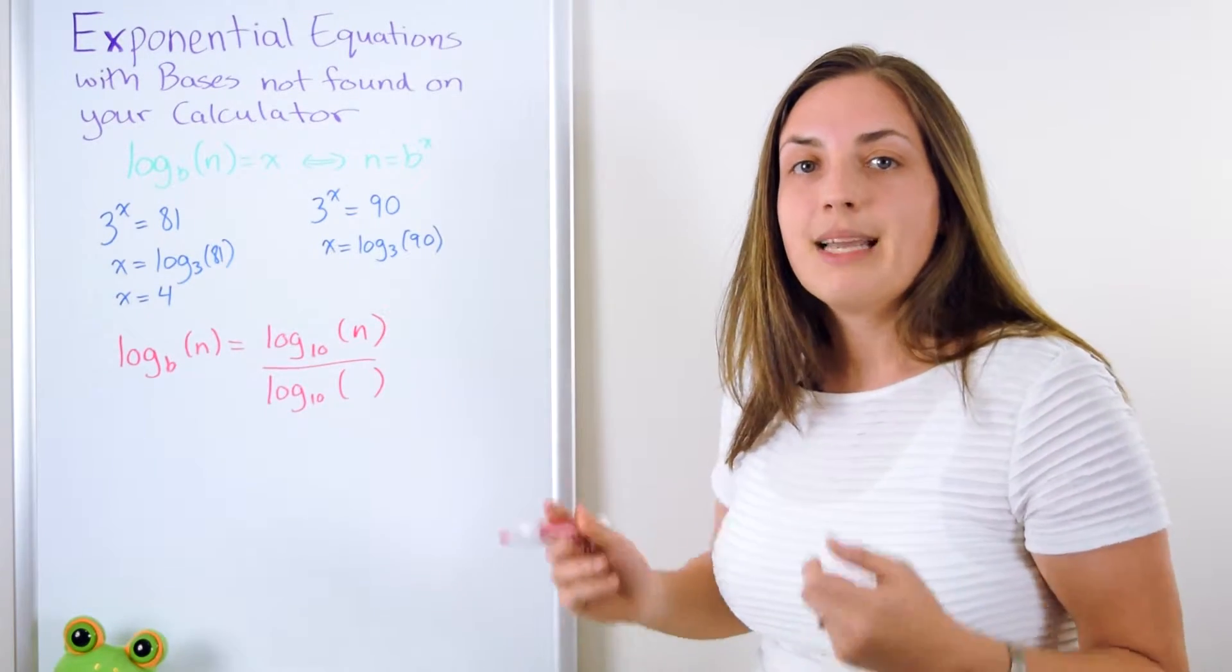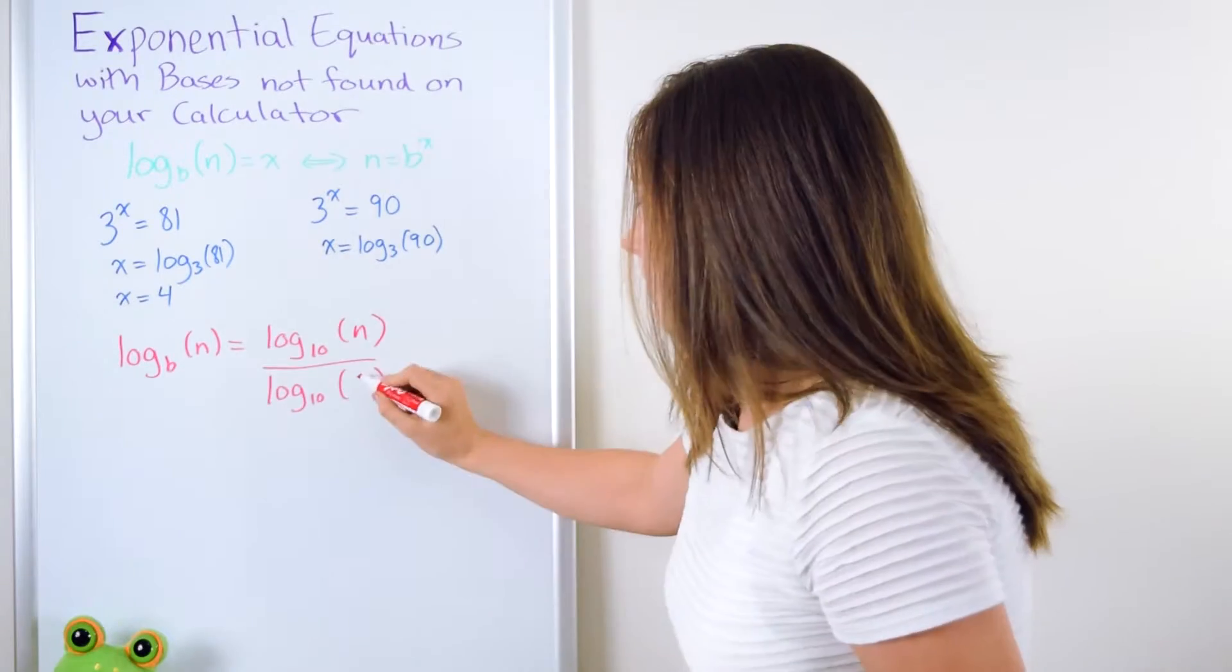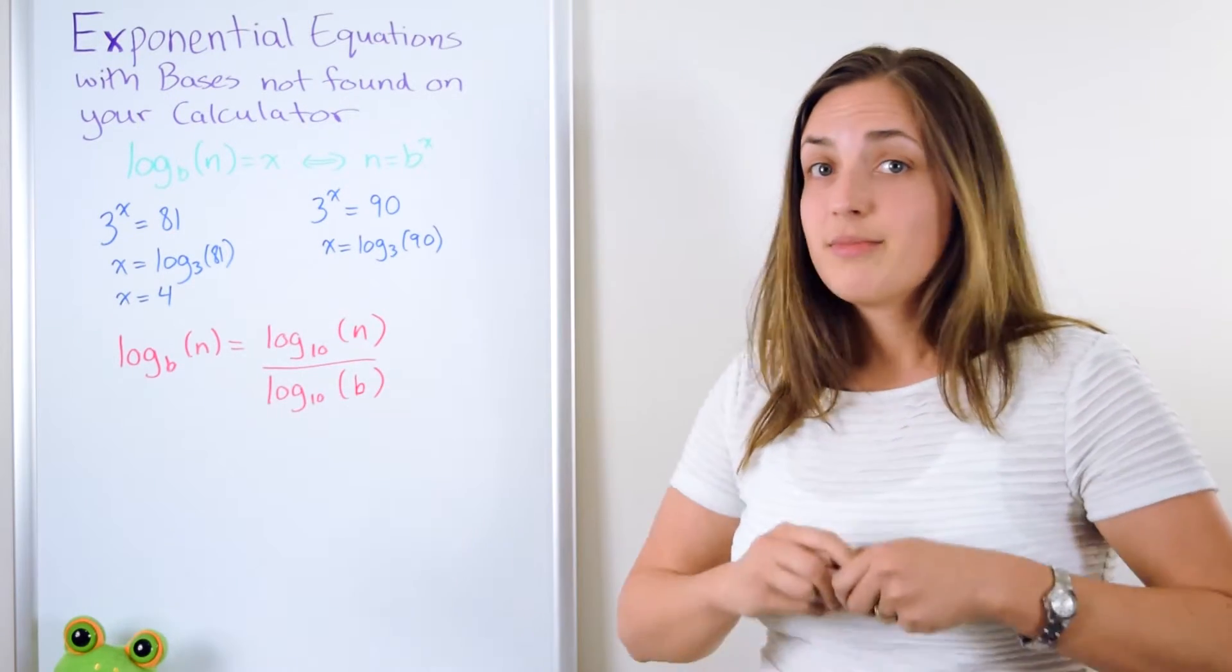The number on the bottom is the little number on the bottom, the base. And there you have it. That's your change of base rule.